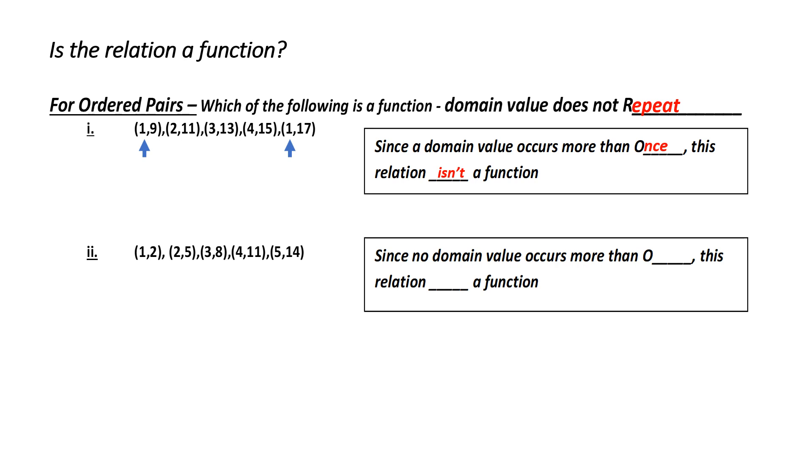Now, look at my second example. My domain values are 1, 2, 3, 4, 5. Notice, no domain value occurs more than once. Therefore, this is a function.